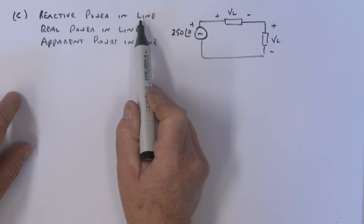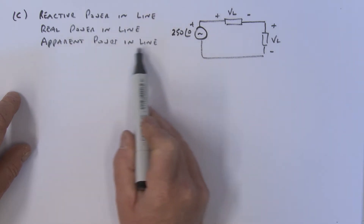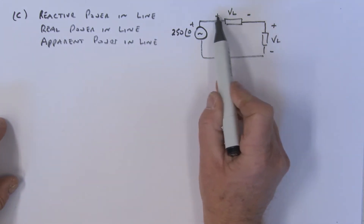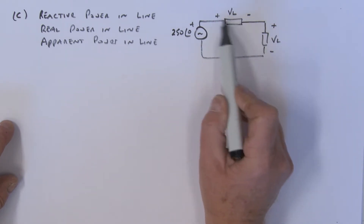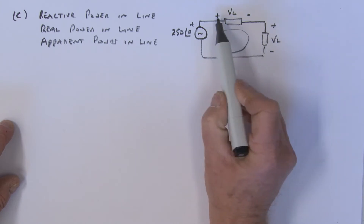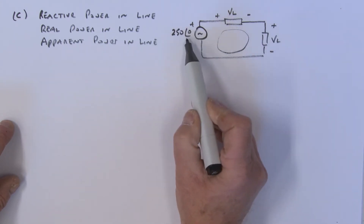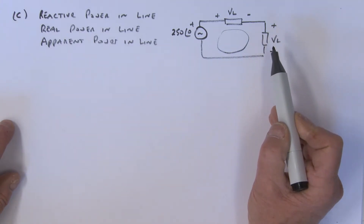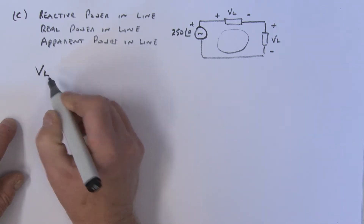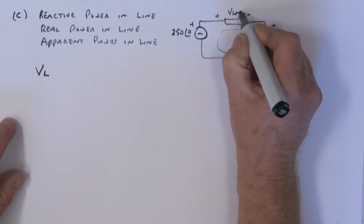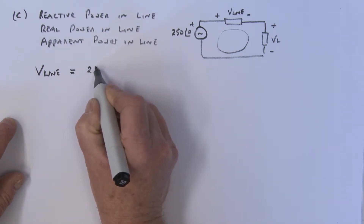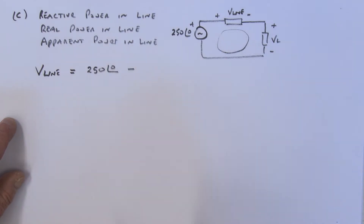Part C is to find the reactive power, real power, and apparent power in the line. What I'm going to do is find the line voltage. I know the current IL, so I'll use Kirchhoff's voltage law — taking a loop and saying the line voltage V_line is equal to 250 at angle zero minus the load voltage VL.